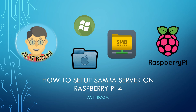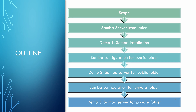We will talk about Samba Server and how to set it up on Raspberry Pi 4. Before we start, let us go through the outline. First of all, the scope will be introduced for the overall presentation. Then Samba Server installation and demo will be shown. In the third part, it covers public folder configuration setting and demo. Finally, private folder configuration setting and demo will be discussed.